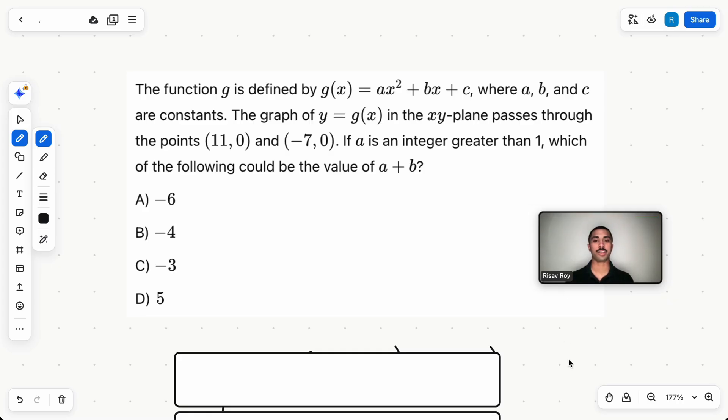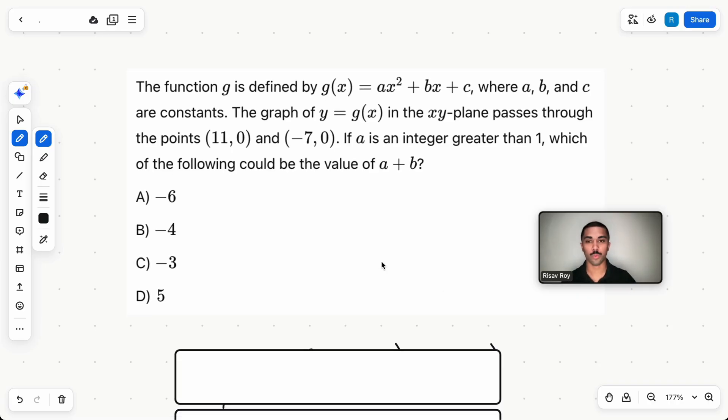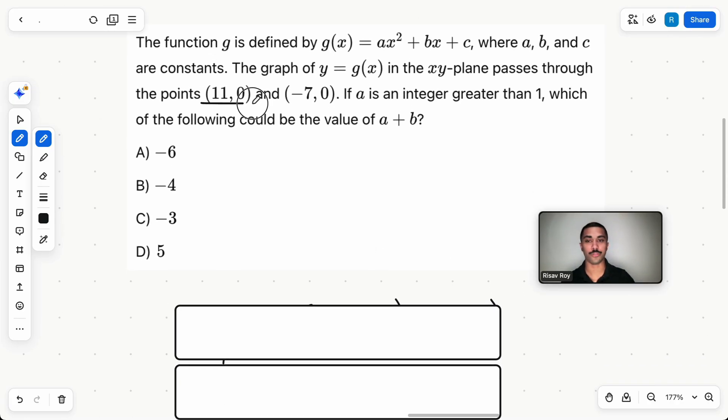The function g is defined by g(x) equals ax squared plus bx plus c, where a, b, and c are constants. The graph of y equals g(x) in the xy-plane passes through the points (11,0) and (-7,0). If a is an integer greater than one, which of the following could be the value of a plus b? How do we even start? Well, we first know that we have two roots right here because the y values are zero.